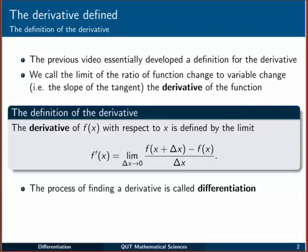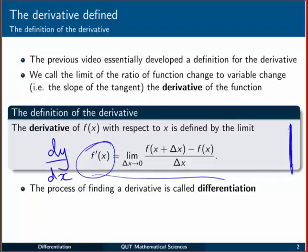We call the limit of the ratio of function change to variable change, in other words the slope of the tangent, the derivative of the function itself. So in terms of a definition we would write the derivative of f with respect to x is defined by this limit. We denote the derivative as f dash or f prime of x, or sometimes dy dx and sometimes other notations as well. We define that to be the limit as delta x goes towards zero, the ratio f plus delta x minus f over delta x.